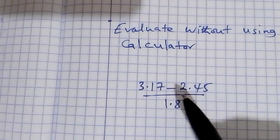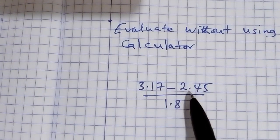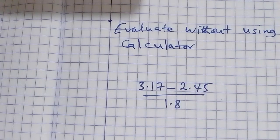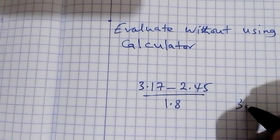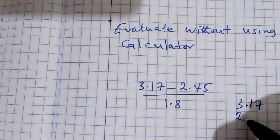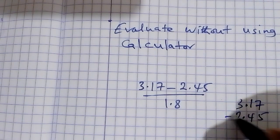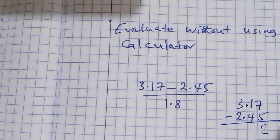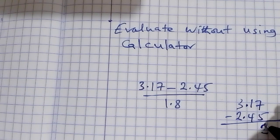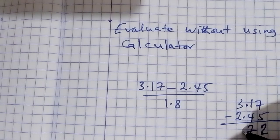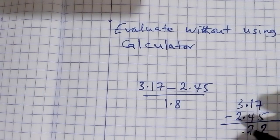So first of all we subtract 2.45 from 3.17. 7 minus 5 is 2, 1 minus 4 is 7, 2 minus 2 is 0.